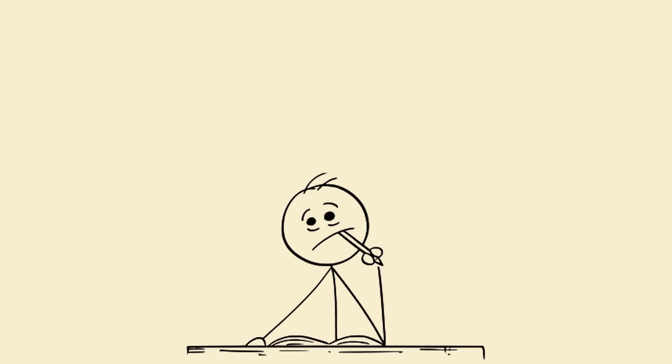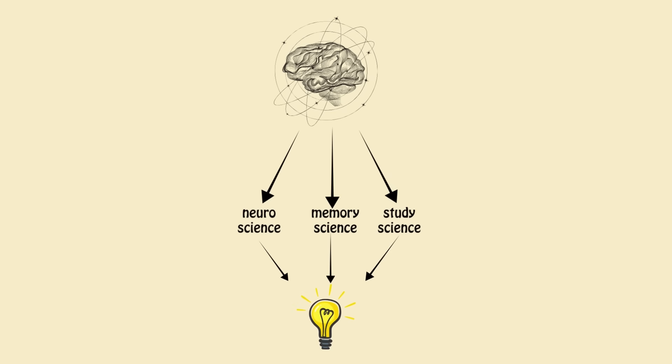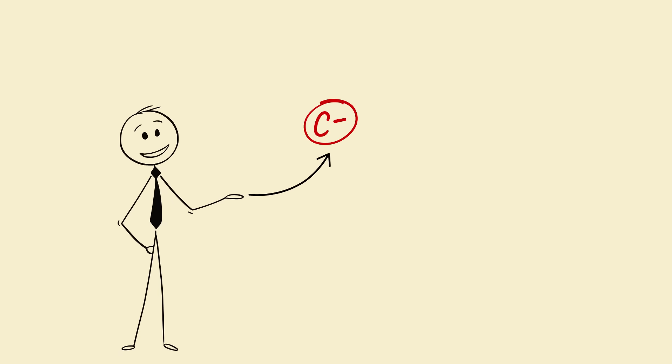I used to open my chemistry book and my brain would just flatline. Too many equations, too many formulas, too many nightmares. But now? I finish chapters in one sitting, remember formulas like phone numbers, and actually like chemistry. Sounds illegal, right? Nah, it's just neuroscience, memory science, and study science all wrapped into a method that'll make you unstoppable. Let's turn that C- into C6H12O6, pure energy. Let's begin.